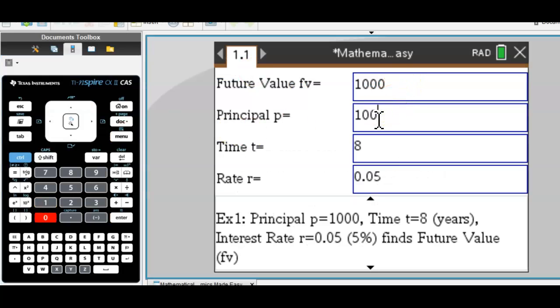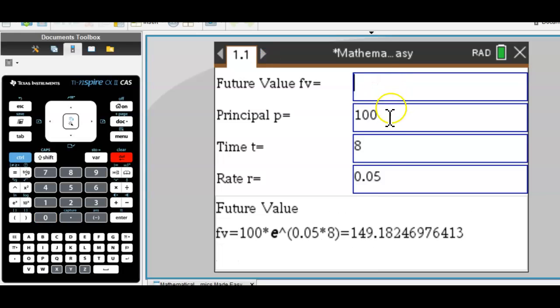Say you have a principal of $100 and you want to know the future value after eight years at a 5% rate. That would be $149.18.